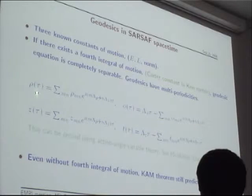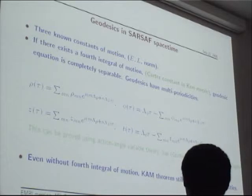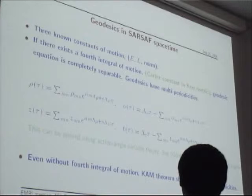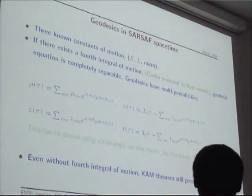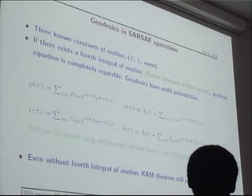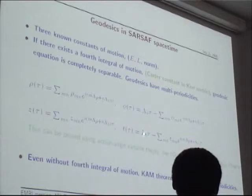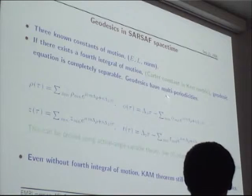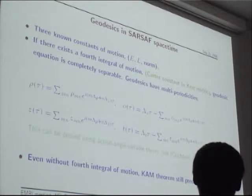The solution to the geodesic equation can be written as a Fourier series. The rho and z coordinates can be decomposed into different harmonic components. In the exponential function there are only two fundamental frequencies, lambda-rho and lambda-z. As for the phi and t coordinates, these have a linearly growing term — lambda-phi and lambda-t account for the linear growing part — and the remaining oscillating part has the same form as the rho and z coordinates. This is well-known and can be proved mathematically rigorously.